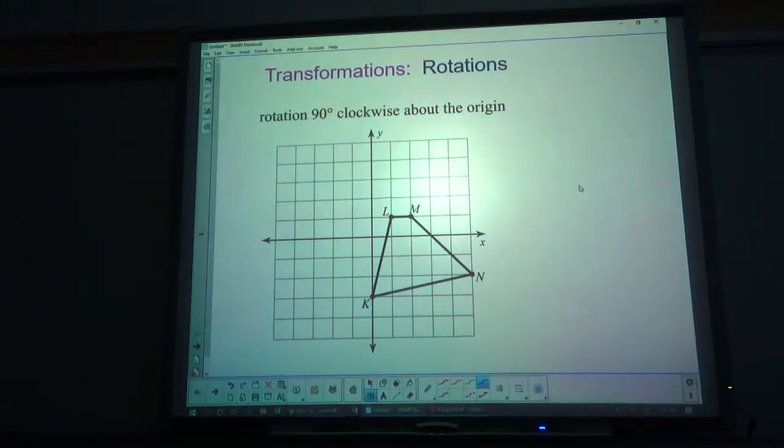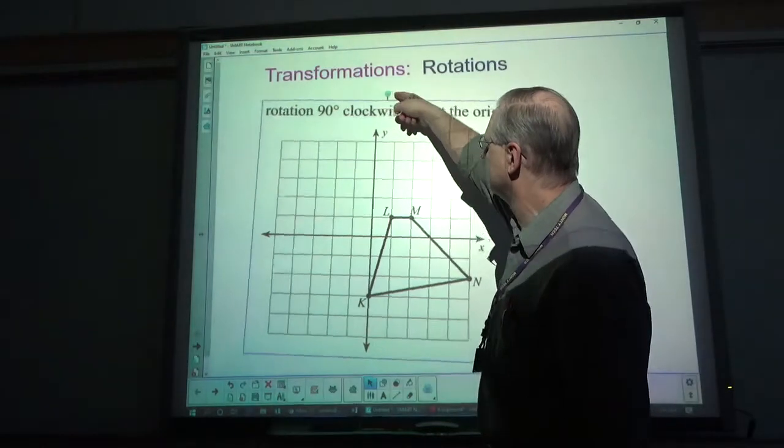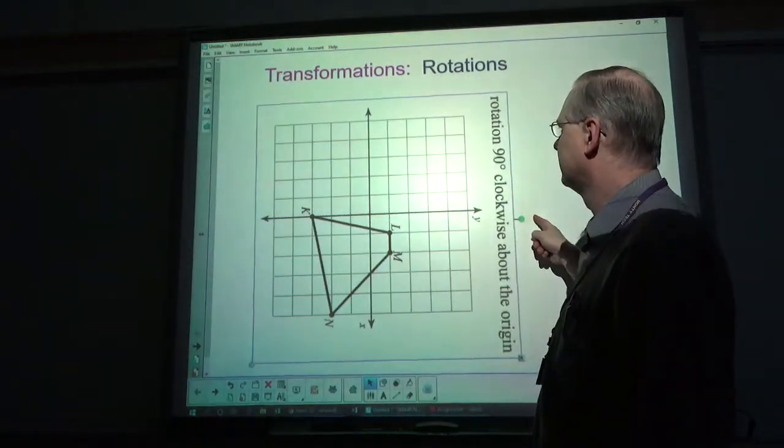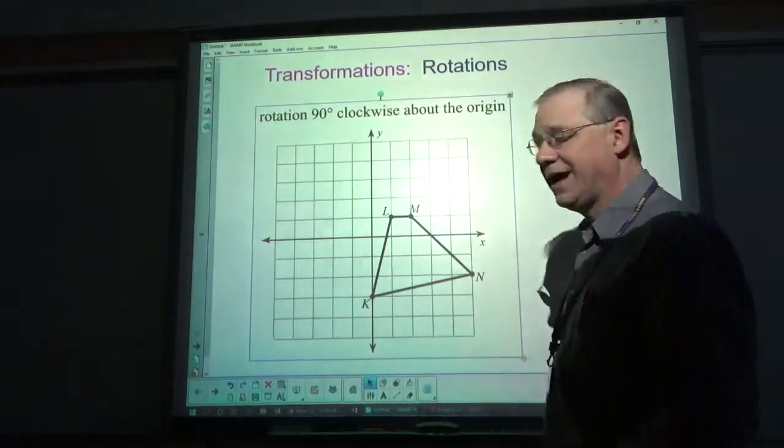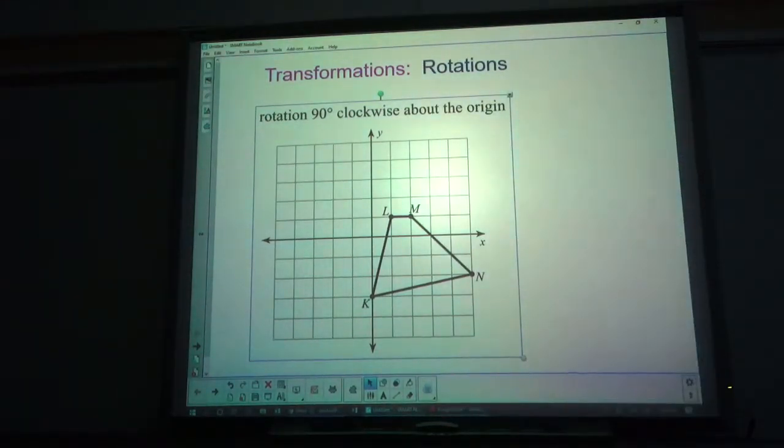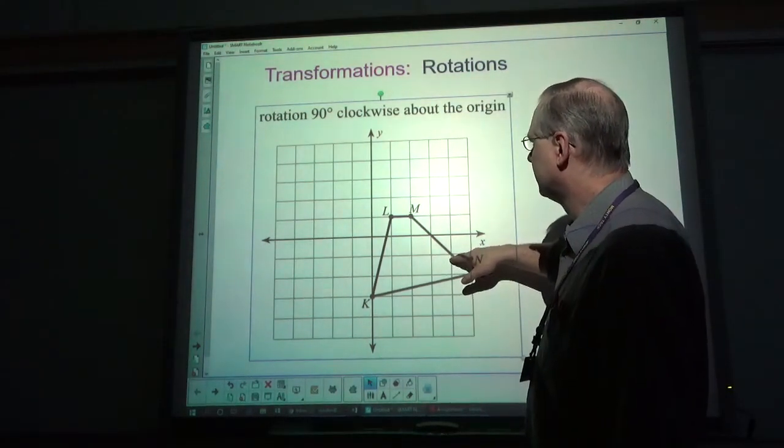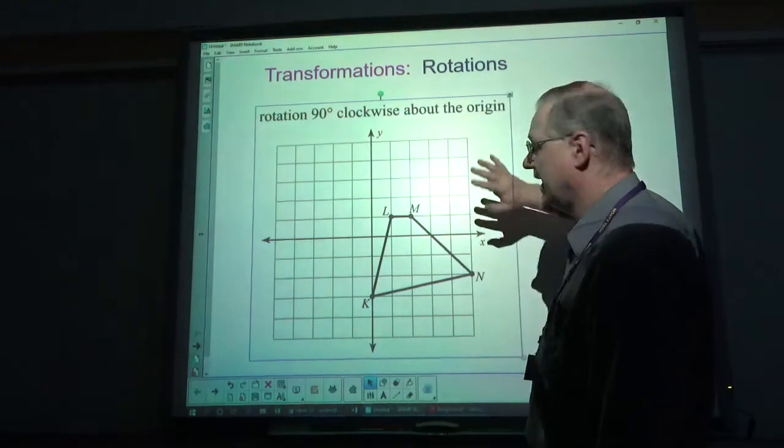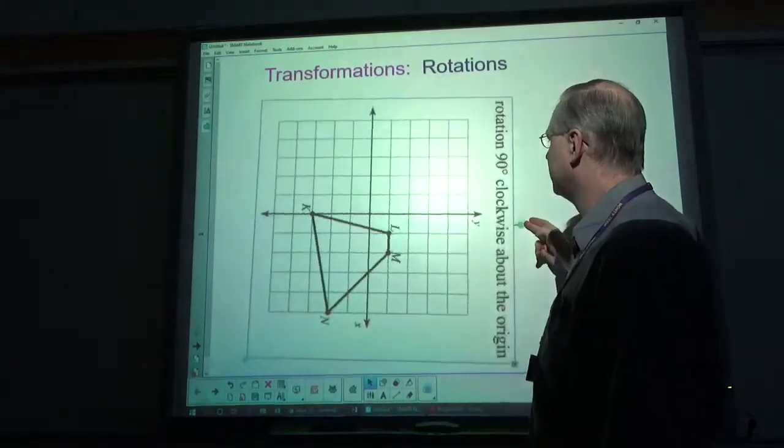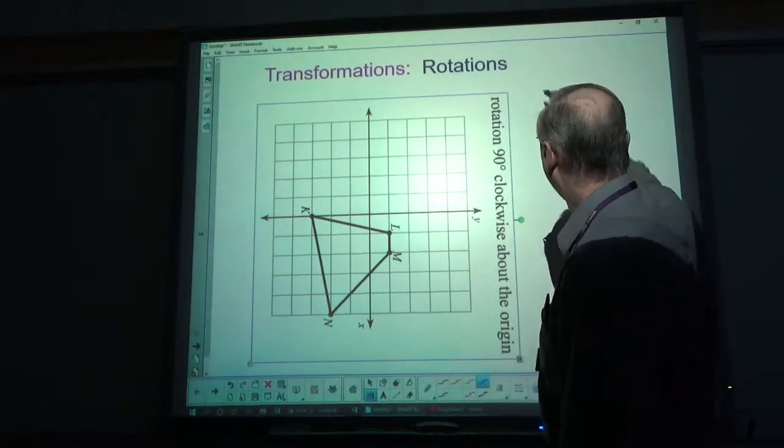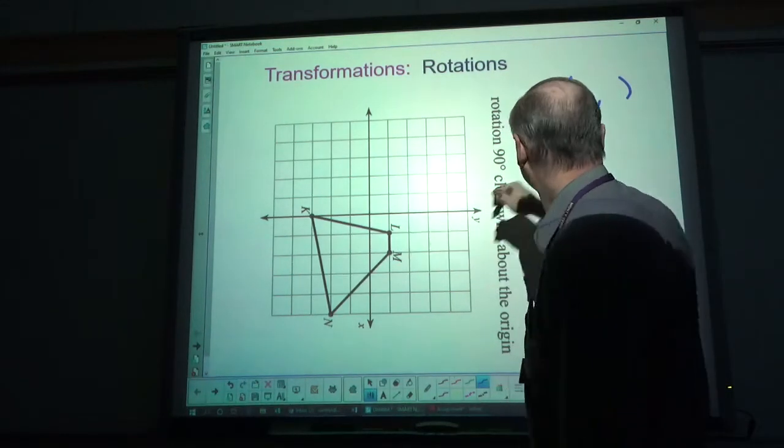If we're working with this and it says 90 degrees, turning 90 degrees is that. I actually suggest that you turn your paper. Currently this is where it is. Now ignore the y and the x for now. When you turn it clockwise 90 degrees, where does L end up? It ends up at 1, negative 1.